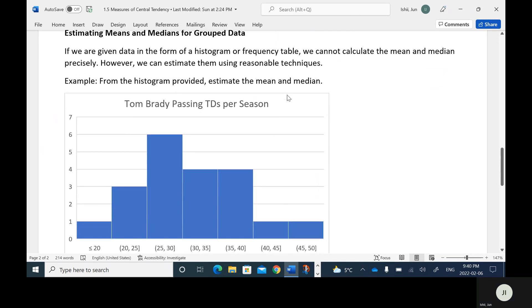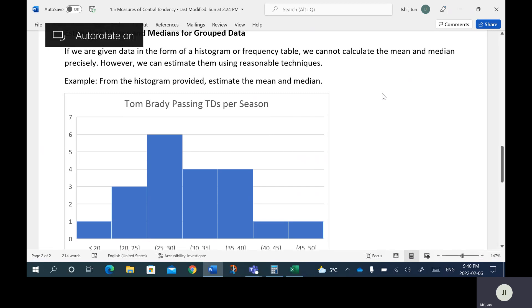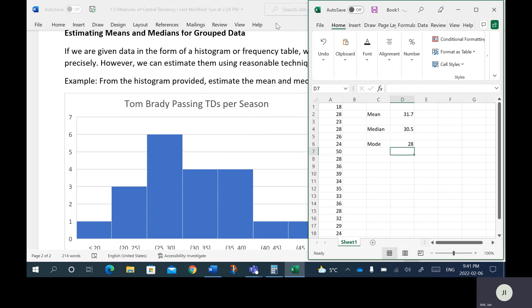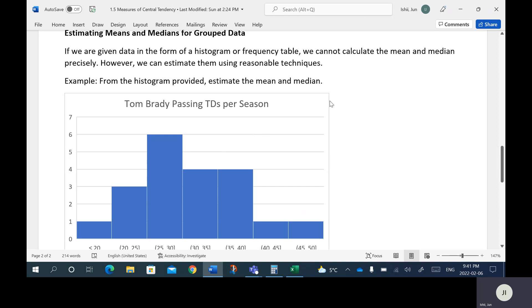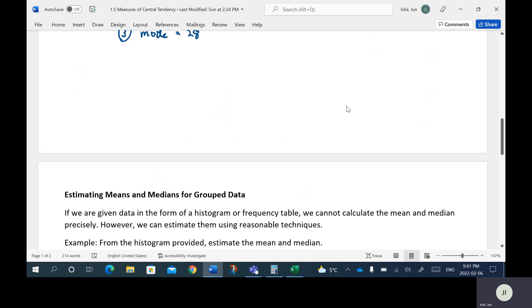So next up here, what we're going to be doing is we're going to be estimating the means and medians for group data. So whenever you see a histogram or what they call a frequency table, these are two different ways. We don't know the exact values, but we do know the counts within ranges. Okay, so if that is the case, there is a way to estimate the mean and the median. If we were given data in the form of a histogram or frequency table, we cannot calculate the mean and median precisely. However, we can estimate them using reasonable techniques. So for example, here from the histogram provided, estimate the mean and median. So what I did actually was I created this histogram with this data here, same data as we had before. So we'll just do an estimate and we'll see how close it is to the actual mean and median that we did find in the previous example.